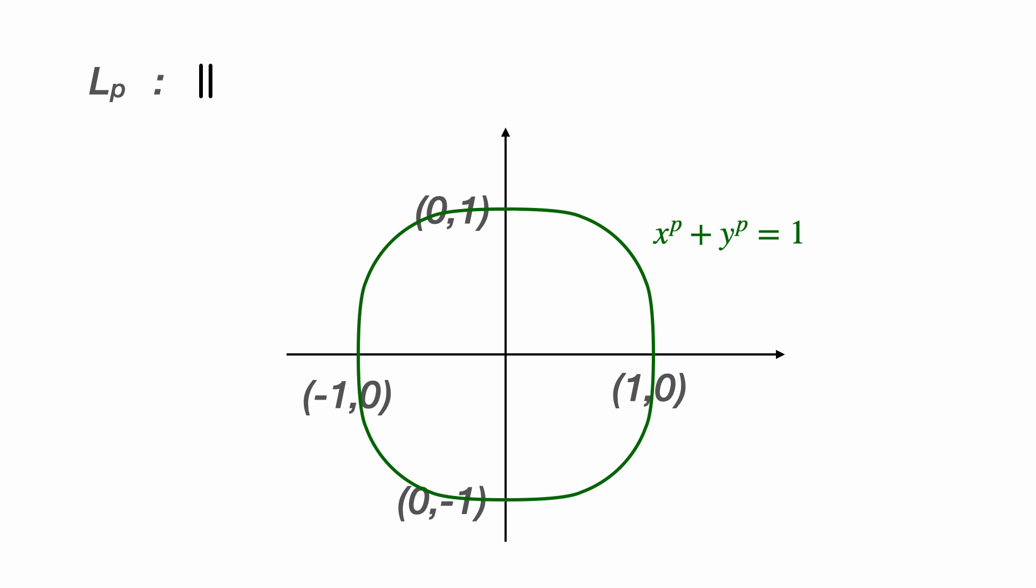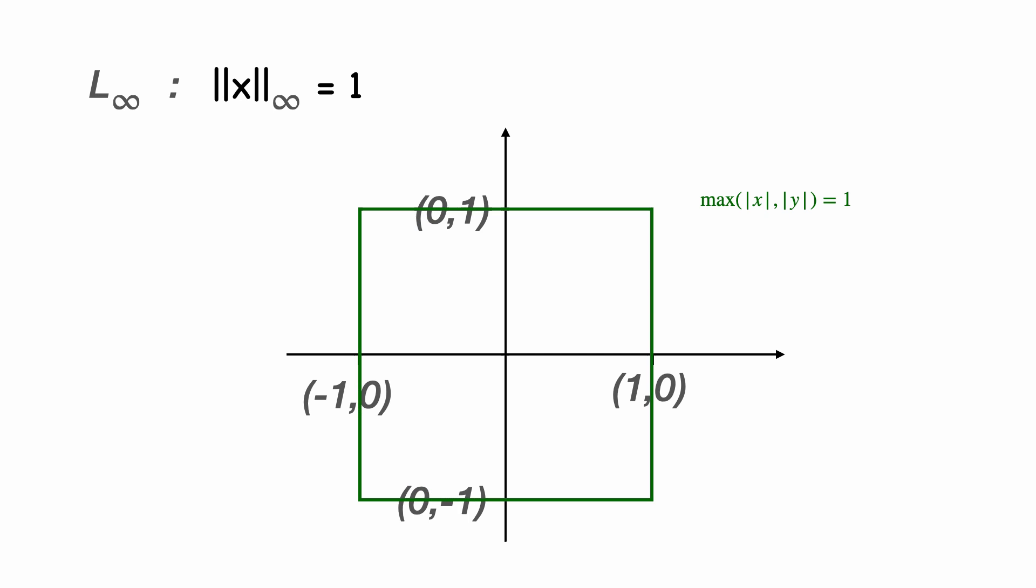For a p greater than 2, the set of vectors with an Lp norm equal to 1 becomes more and more like a square. And then as we approach the limit of p tending to infinity, we end up with this square with the corners at (1,1), (1,-1), (-1,-1), and (-1,1).